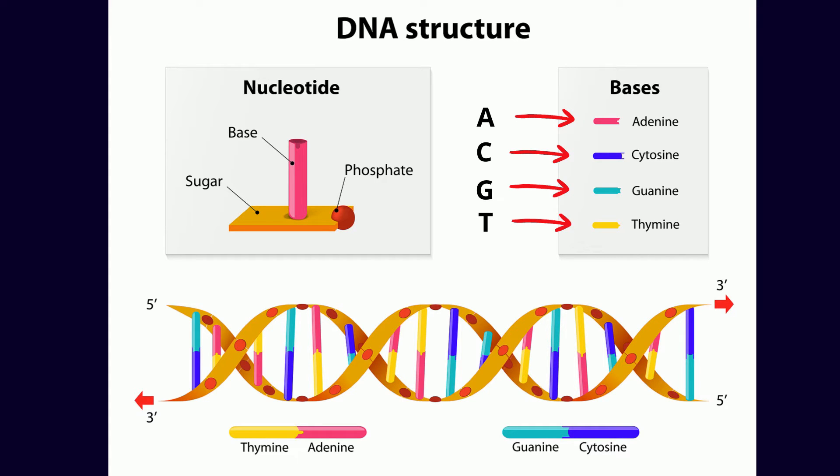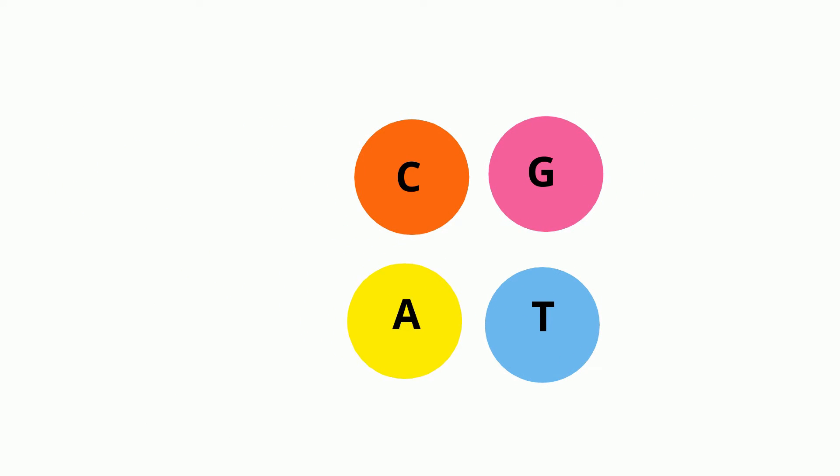Base pairs are formed by hydrogen bonds between the bases of two nucleotides. Adenine always pairs with thymine, and guanine always pairs with cytosine. There are roughly three billion base pairs.